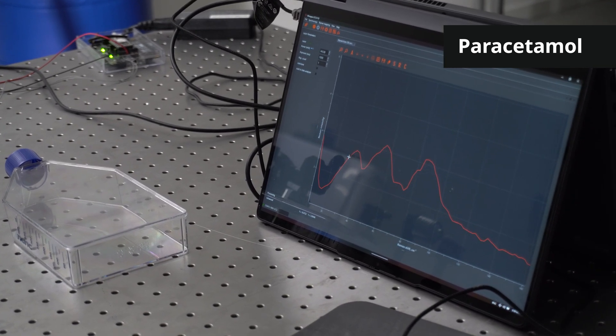The Raman bands in low-frequency range below 200 wave numbers provide the information on crystallinity and polymorphism of the sample, which is extremely valuable for the quality control in pharmaceutical industry.